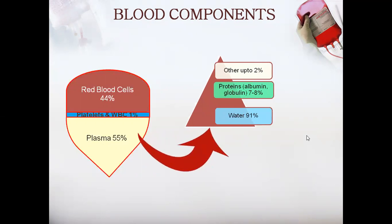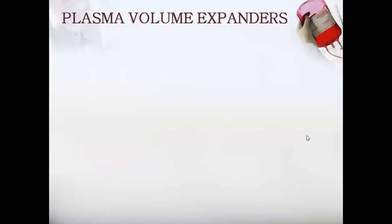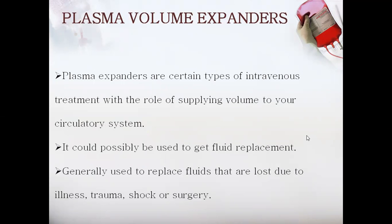This plasma consists of about 91% water, and 78% albumin and globulin proteins are present in the plasma with other components making up 2%. Plasma volume expanders are agents given as a supplement to increase the volume of the circulatory system in cases of trauma, injury, shock, surgery, or burns. They are given intravenously as a fluid replacement.